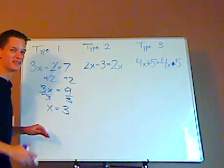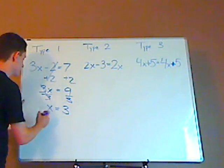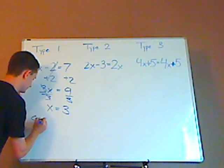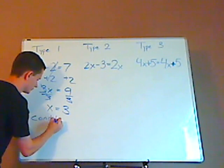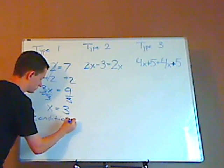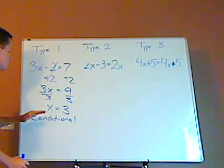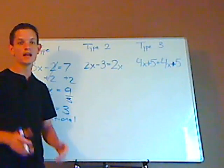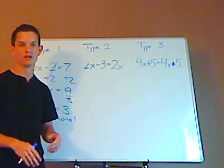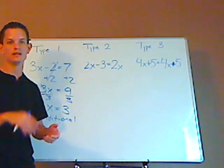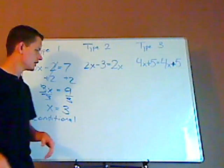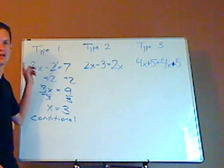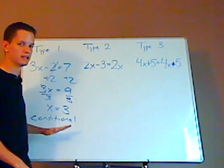Now this is the first type and the most common type, and it's called conditional, because it's only true when x is this. When x is something else, it's false. So if x is two, one, four, whatever, if it's not three, it's false. So it's conditional,